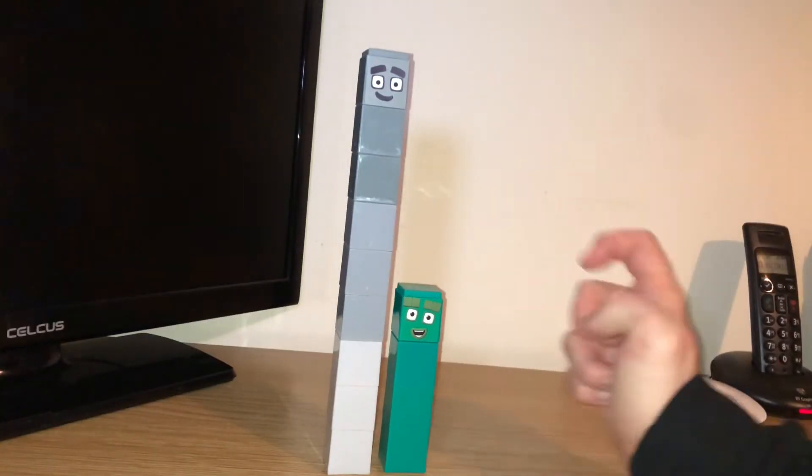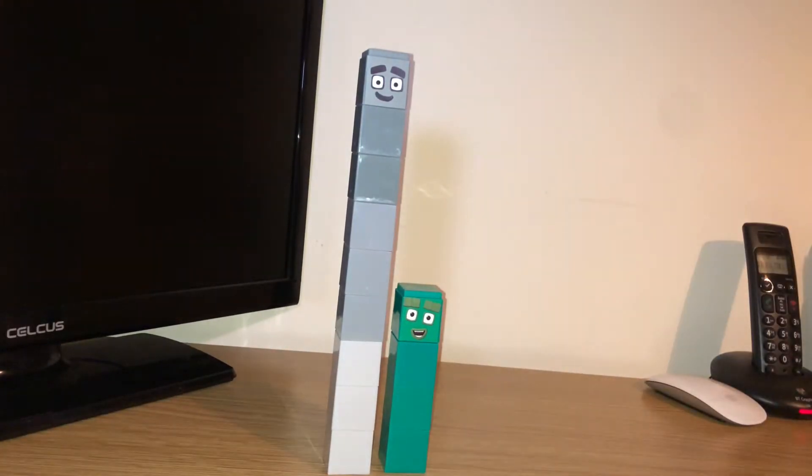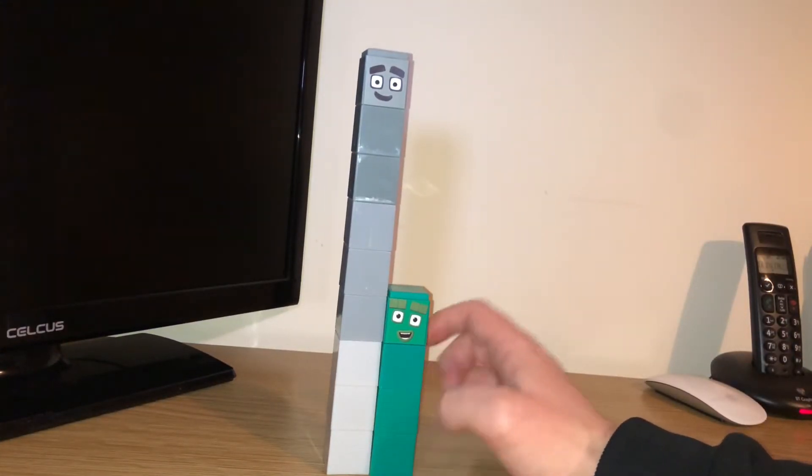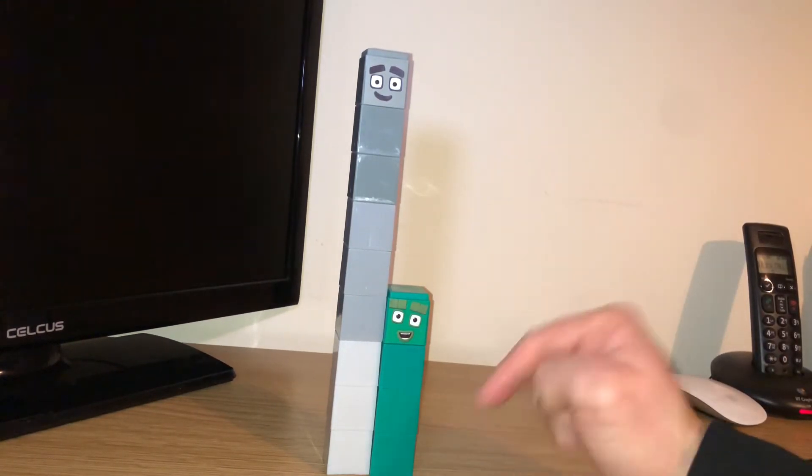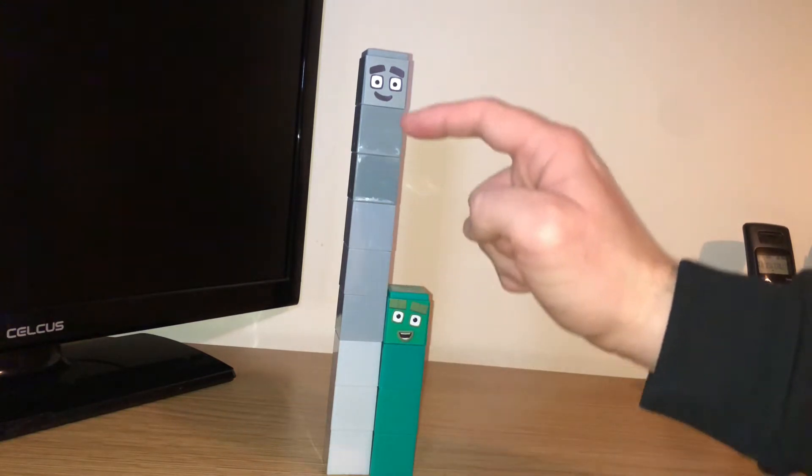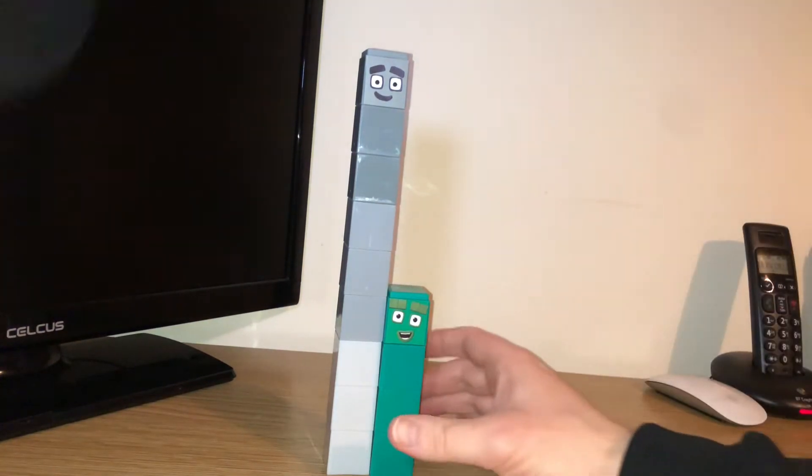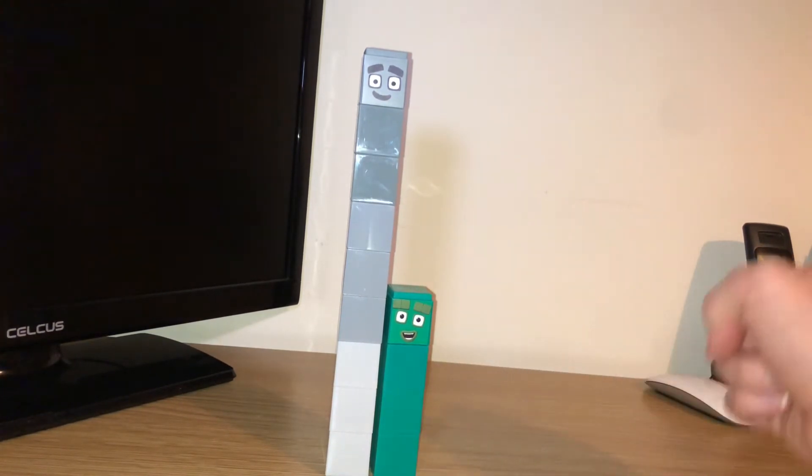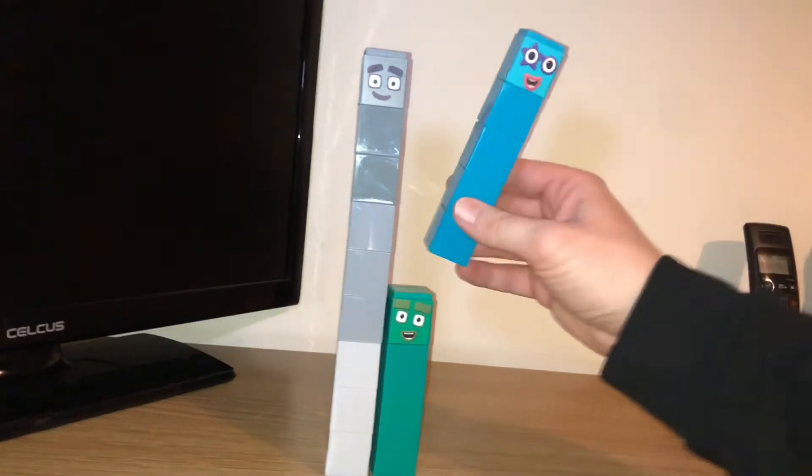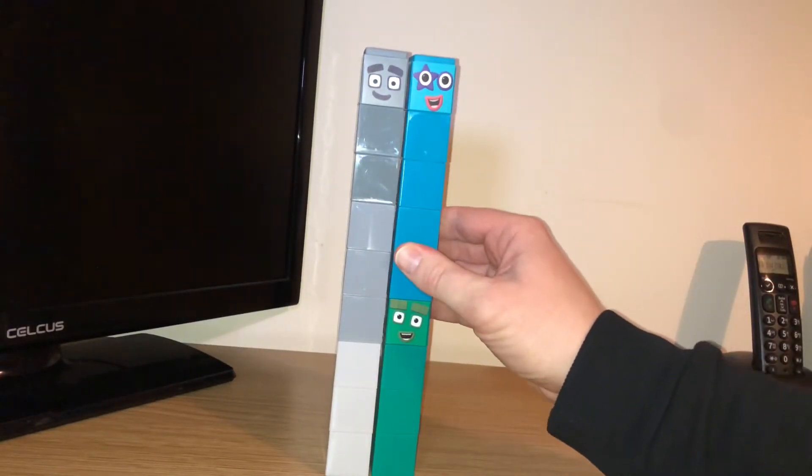So here we've got number block number four and number block number nine. At the moment it doesn't look like there's anything in common because look how small number four is compared to number nine. I wonder how many blocks bigger number nine is. One, two, three, four, five. Number block nine is five more blocks taller than number four. I can prove that by getting number five and sticking him on top. Can you see that?